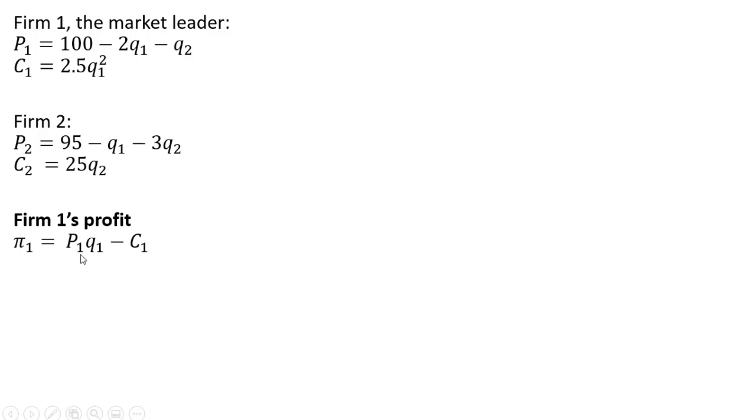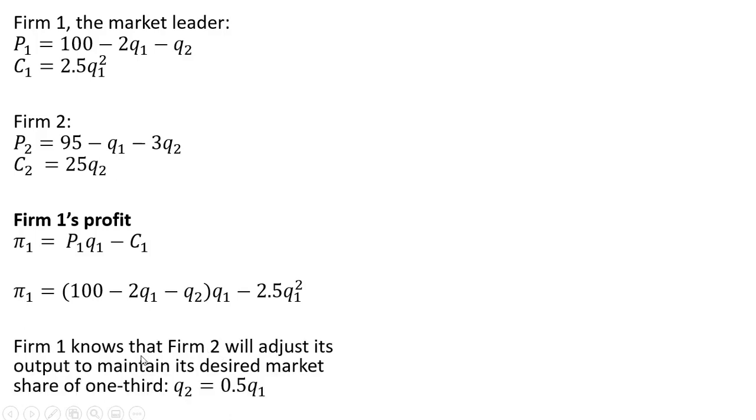For p subscript one, we're going to incorporate and plug in firm one's inverse demand. And then we'll subtract out firm one's cost. The key thing here is that firm one knows that firm two will adjust its output to maintain its desired market share of one-third. And that is incorporated by this equation that we solved on the first slide.